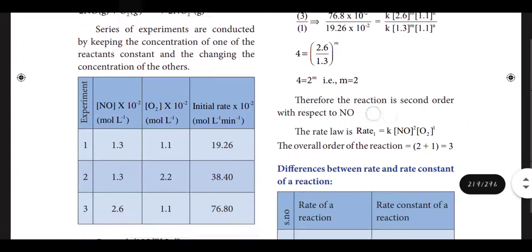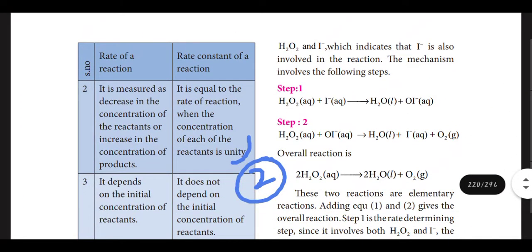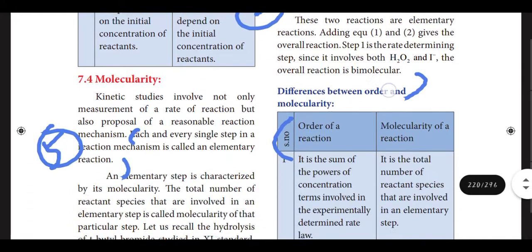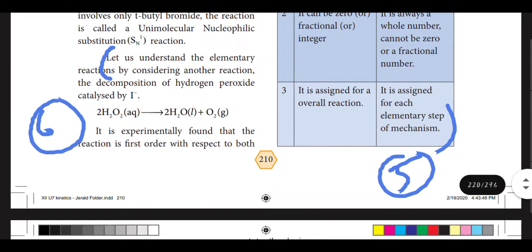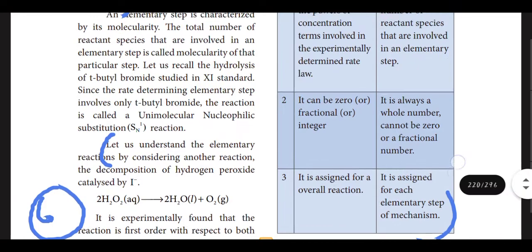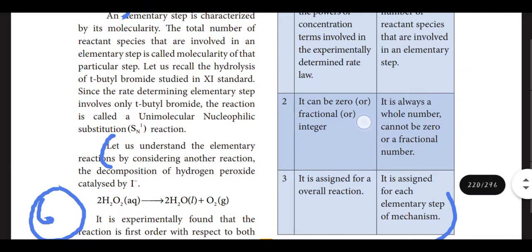Coming to page 208, the answer for rate law has the definition and example in the material. Page 209 has rate constant. First point: it is a proportionality constant. Next: K is equal to the rate of the reaction when the concentration of each reactant is unity. You can go through the material. Next question on molecularity and difference between order and molecularity: what is elementary reaction? Each and every single step in a reaction mechanism is called an elementary reaction.